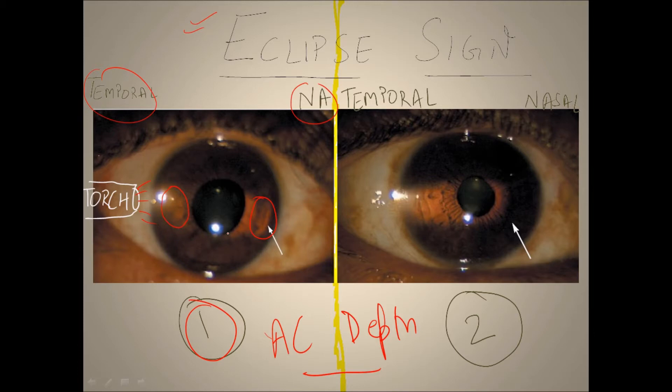In the second picture, we can see the torch again at the temporal limbus, but this side is getting illuminated while this side isn't. You can see there is an eclipse of this light.